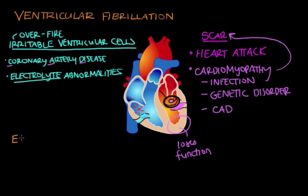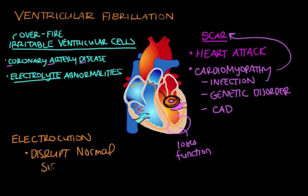And one final thing that might cause ventricular fibrillation that's not as common is electrocution. In electrocution, you have some sort of outside source of electricity entering the body. So where the heart would have a normal electrical conduction system, electrocution is going to disrupt this normal signaling. And that can lead to ventricular fibrillation.